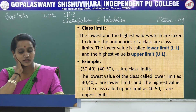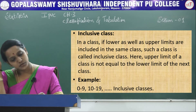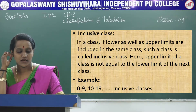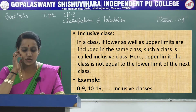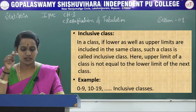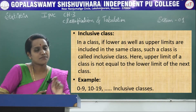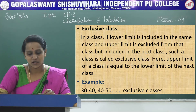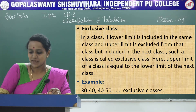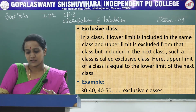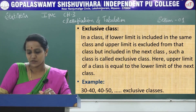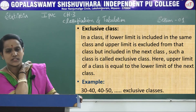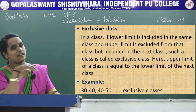In class limits there are two types: inclusive classes and exclusive classes. In an inclusive class, both the lower and upper limits are included in the same class; the upper limit of the class is not equal to the lower limit of the next class — for example, 0 to 9, 10 to 19, etc. In an exclusive class, the lower limit is included but the upper limit is excluded from that class and included in the next; the upper limit equals the lower limit of the next class.